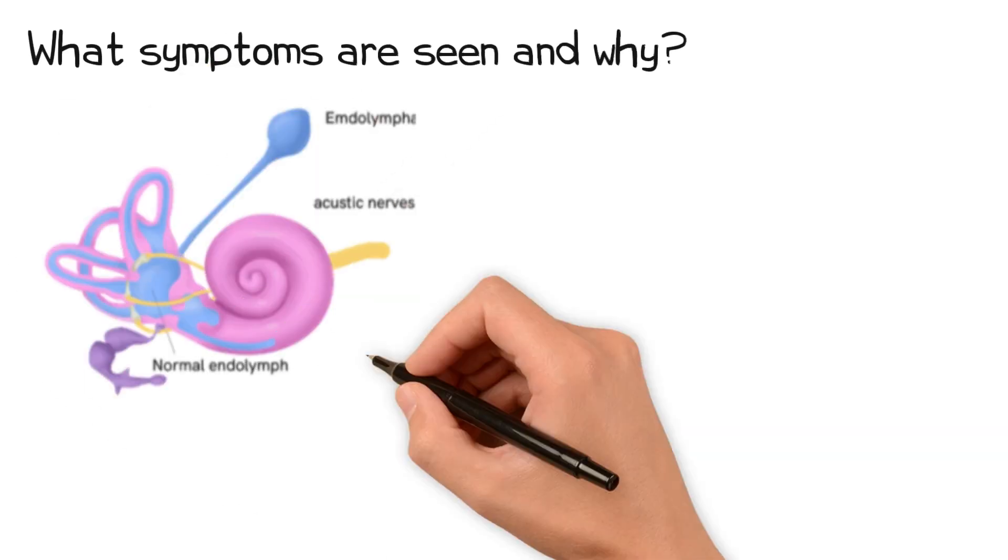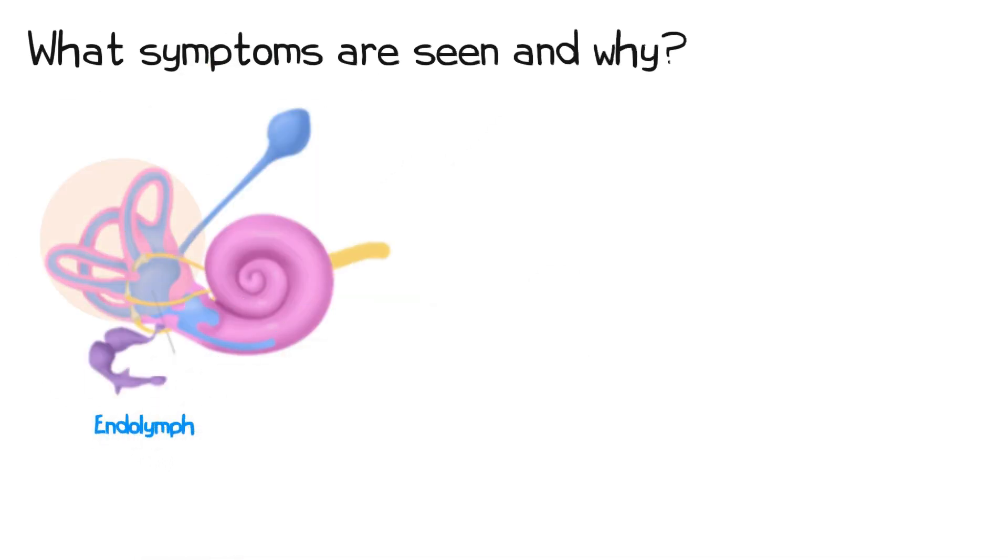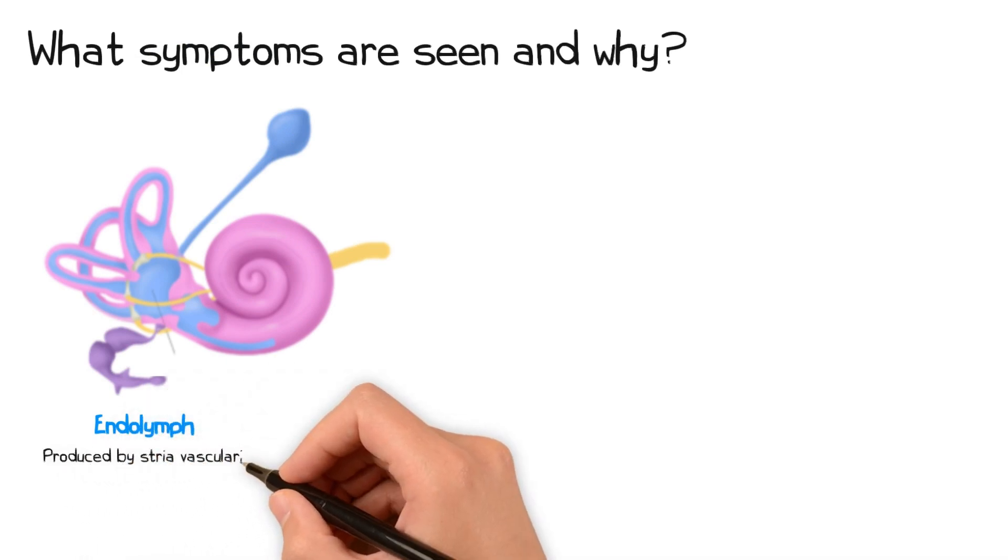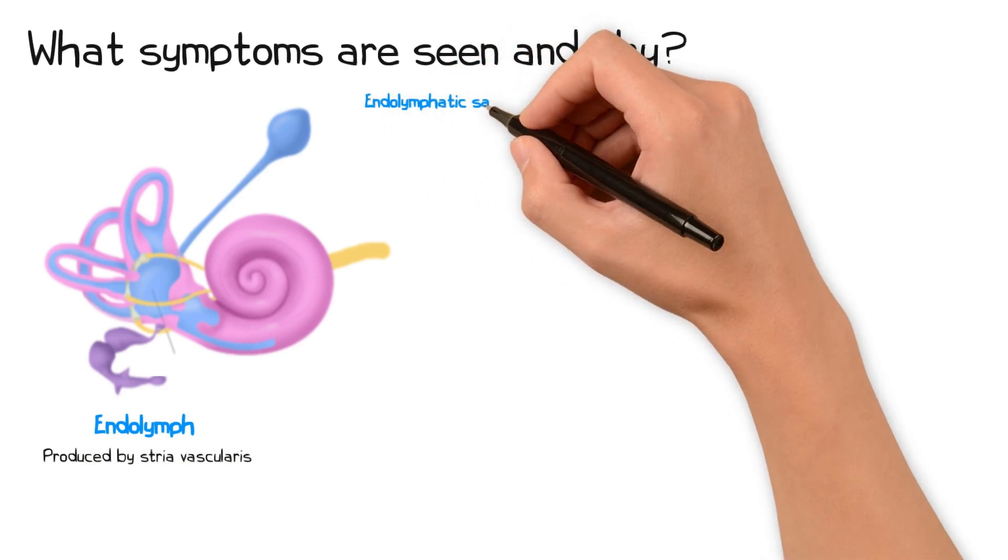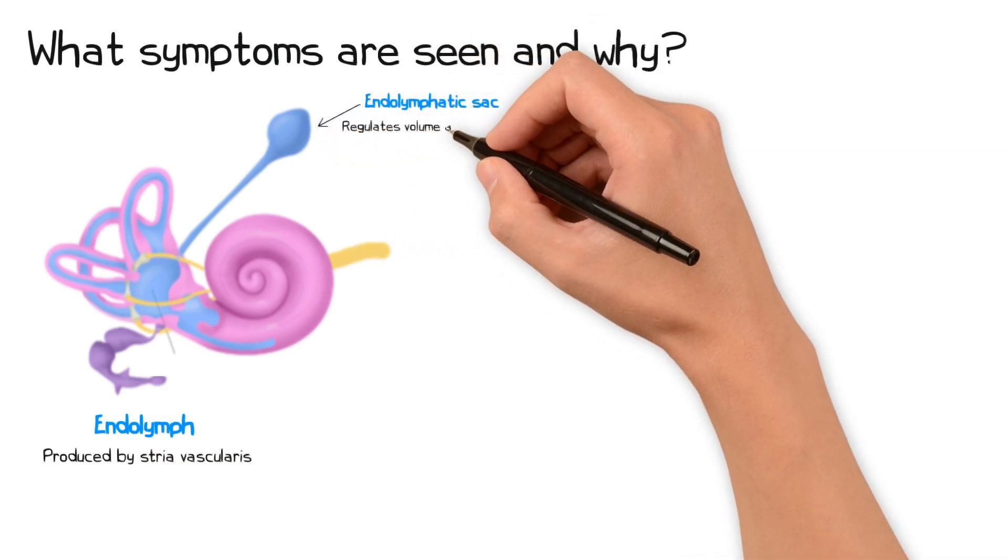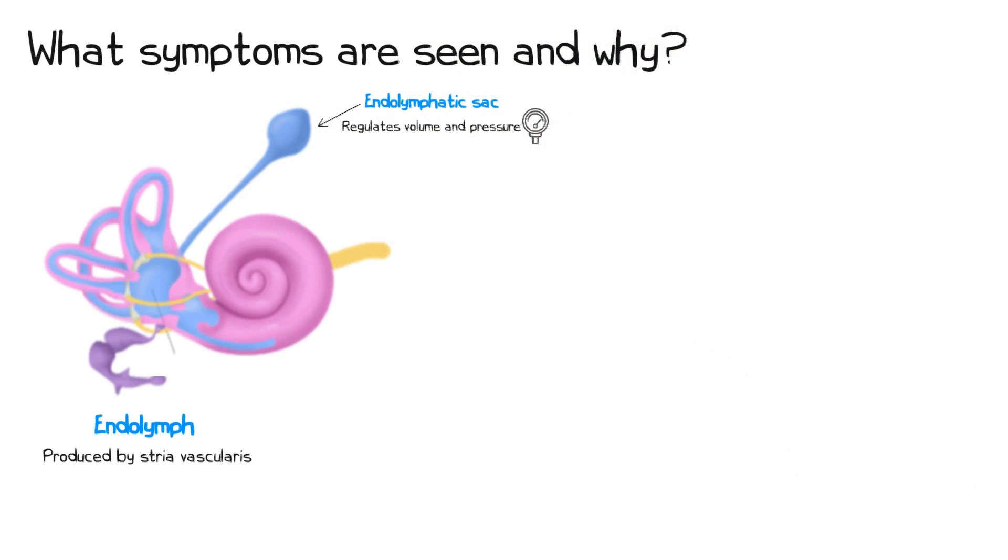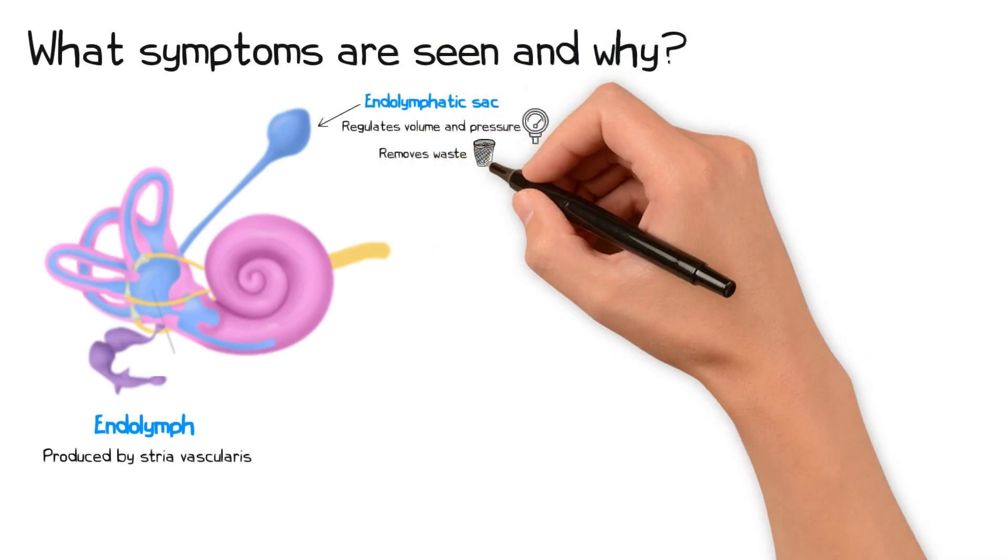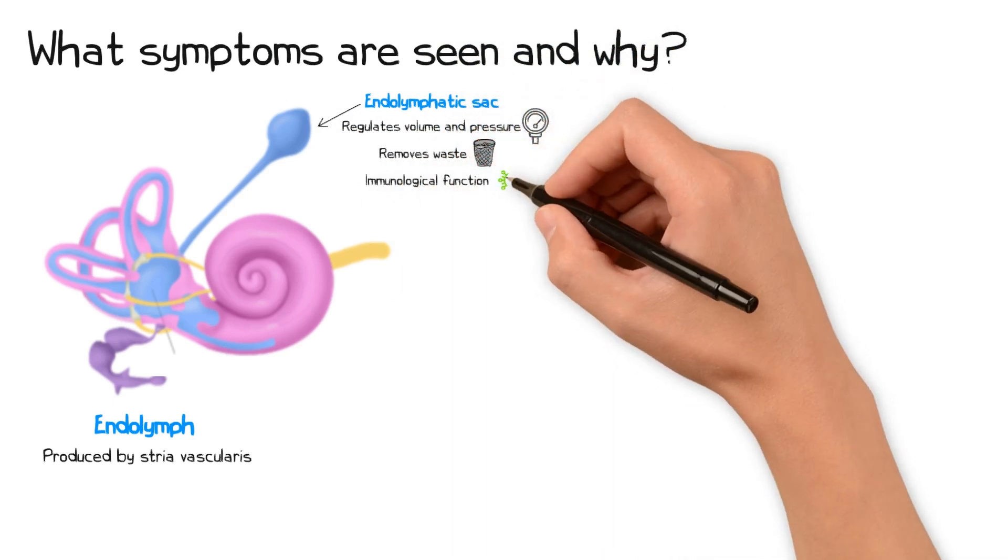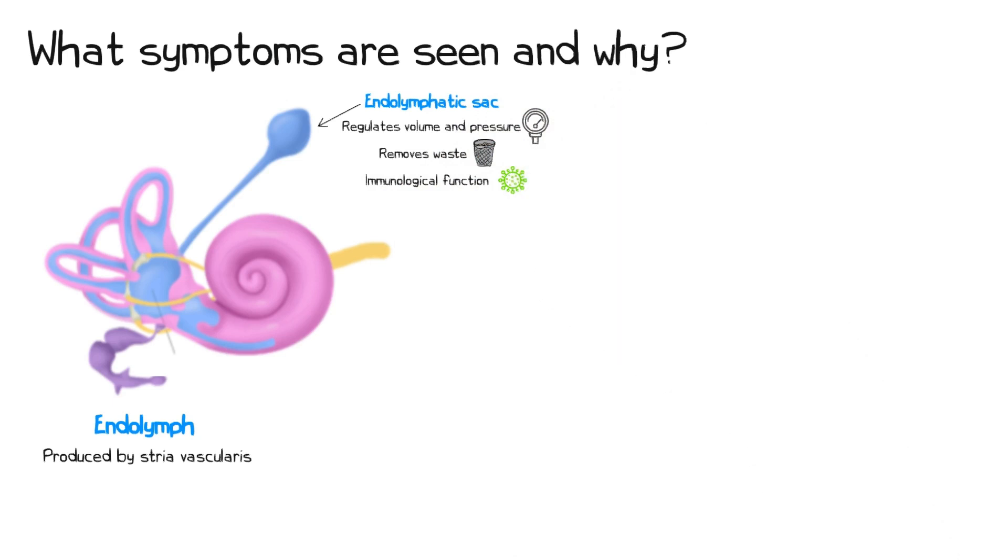Endolymph is the fluid that bathes the sensory cells in both the organ of balance and the cochlear duct. It is produced by the stria vascularis of the ear. These endolymph-filled spaces communicate with the endolymphatic sac, which regulates the volume and pressure of endolymph, removes inner ear waste products, and provides an immunological function. In contrast with perilymph, endolymph contains high concentrations of potassium, which is essential for the normal functioning of the hair cells.